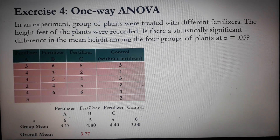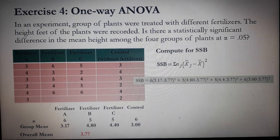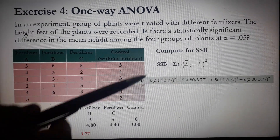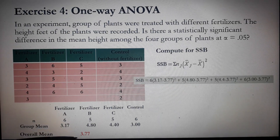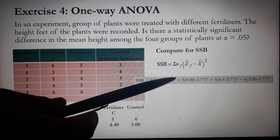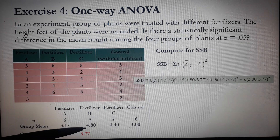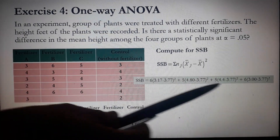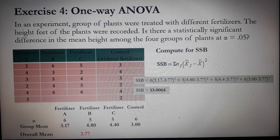Let's compute the SSB. The equation is the sum of N times (group mean minus overall mean) squared. For fertilizer A: 6 times (3.17 minus 3.77) squared — you subtract first, then square, then multiply by 6. For fertilizer B: 5 times (4.80 minus 3.77) squared. Apply the same procedure for the rest of the data. The final result is SSB = 13.0064.